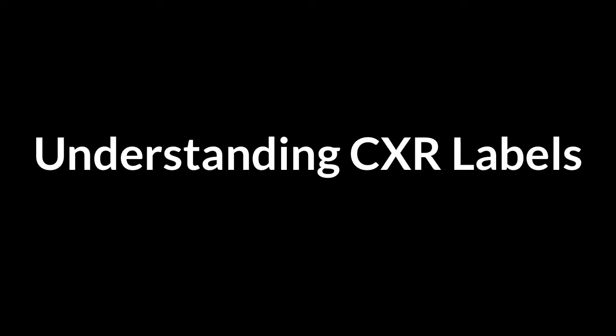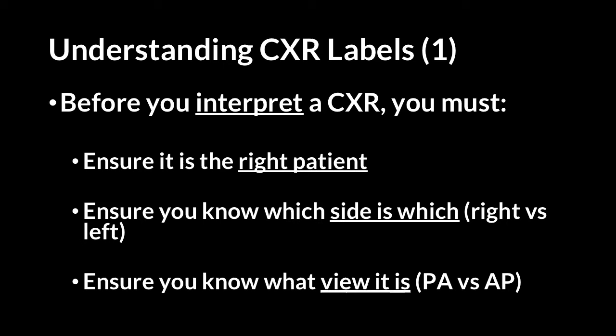Now let's go through the labels you'll often encounter on a chest X-ray. Before interpreting any chest X-ray, there are three things you must do: ensure it is the right patient; appreciate which side is right versus left by looking for the L or R label; and make sure you know what view it is — this is where the concept of PA view versus AP view comes into play. On the chest X-ray shown, you'll also see nipple rings, used in some female patients to denote the nipple region, as dense areola tissue can incorrectly be mistaken for pathology.